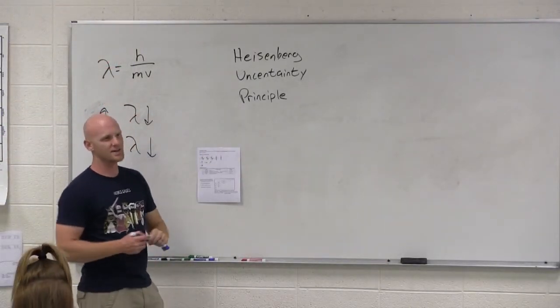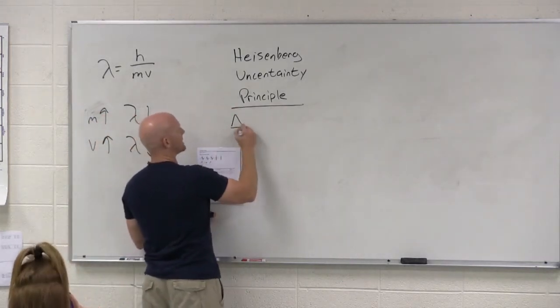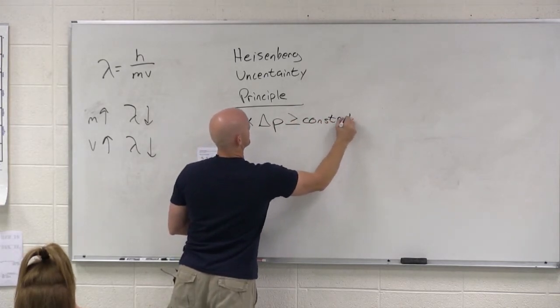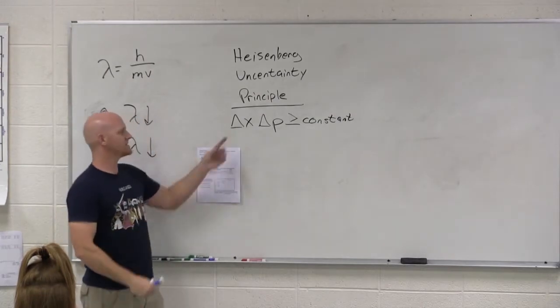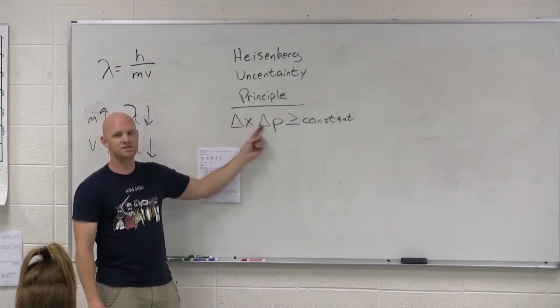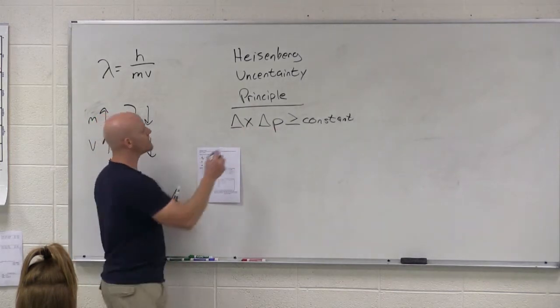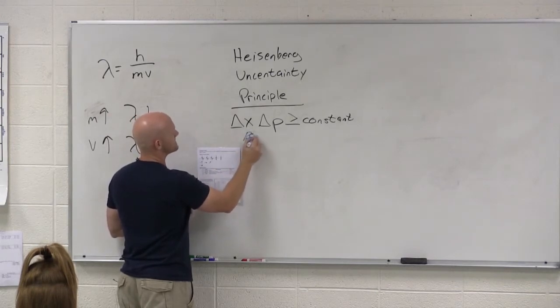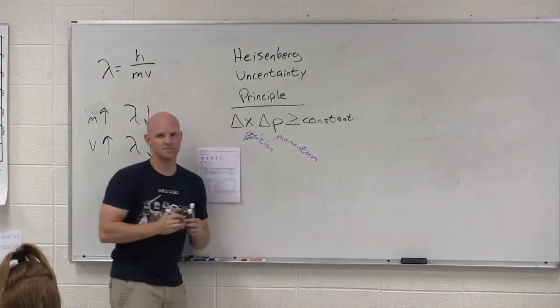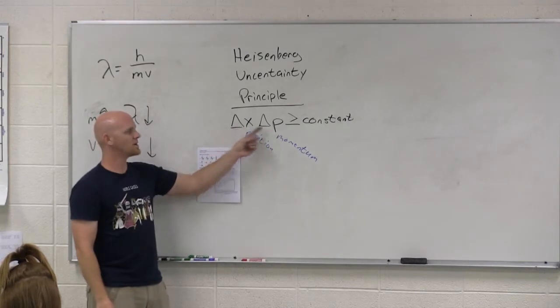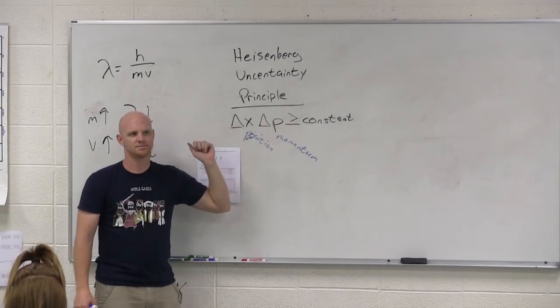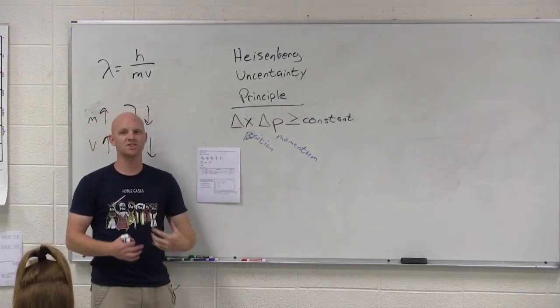All right. Heisenberg uncertainty principle. This is a little bit funky thing. You need to know a couple things about this. Mathematically, we'd save it like this. I don't care that you know what the constant is, but this stands for the uncertainty in an object's position. Usually, we're talking about electrons here. And this is the uncertainty in the object's momentum. Those are two very important words when talking about this. So this is position and momentum. So if you take the uncertainty in one and the uncertainty in the other and you multiply them together, it always has to come out bigger or equal to a certain constant. It means you always have to have some certain amount of uncertainty.